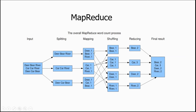Now we have three sets of data. In between, shuffling will happen. Shuffling means these three parts of the file will be shuffled across, and items with the same key will go together. For example, bear appears here and also here, so 'bear one, bear one' is together. Car one, car one, car one came three times. Dear and river are similarly grouped. This is an additional phase between map and reduce that I will discuss later.